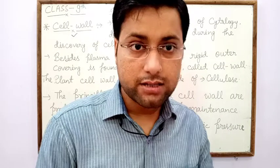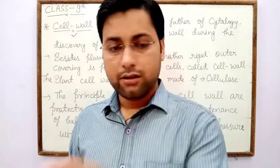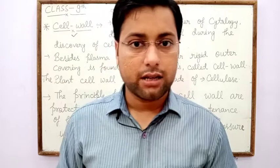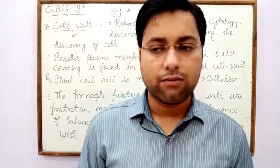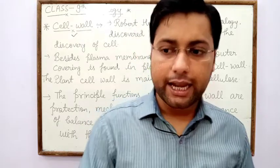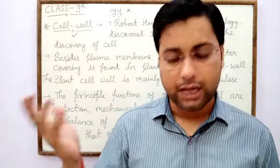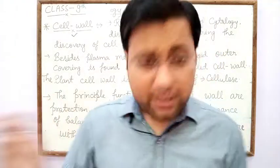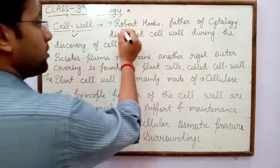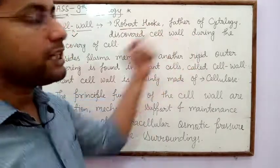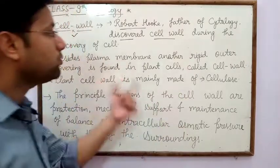In the case of plant cell, cell wall is made up of a different component than in bacterial cell or fungal cell. There are different components of cell wall in different types of cells like plant, fungi, and bacteria. Here, Robert Hooke — the father of cytology — discovered cell wall.